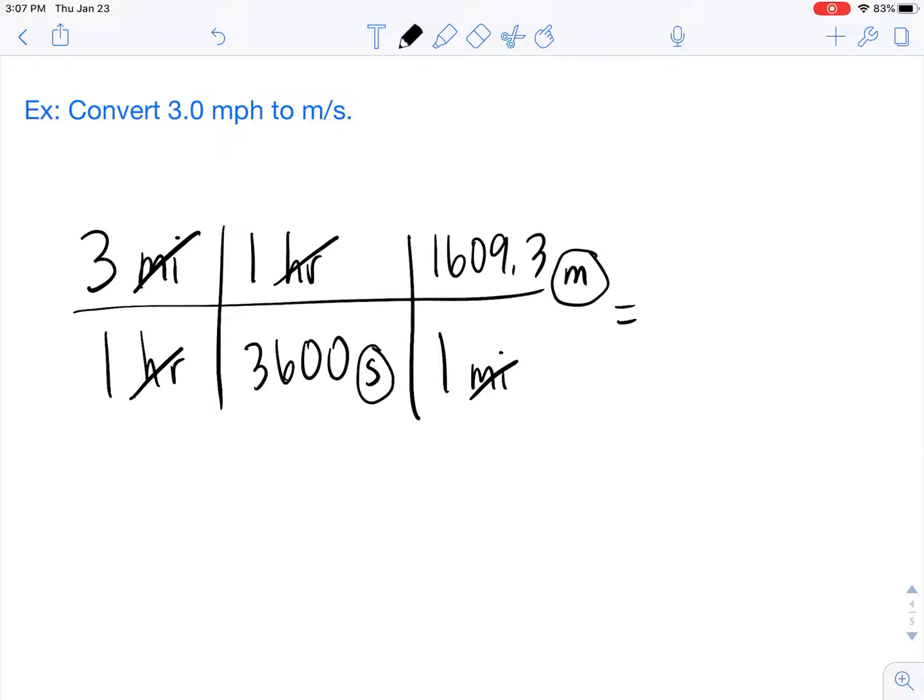So you're going to multiply everything on the top and divide by everything that's multiplied on the bottom. So 3 times 1,609.3 gives us 4,827.9 meters divided by